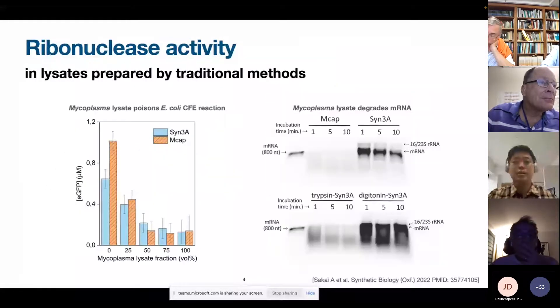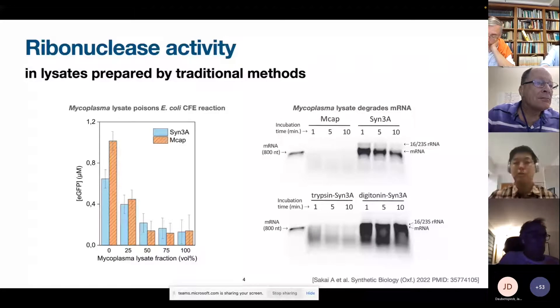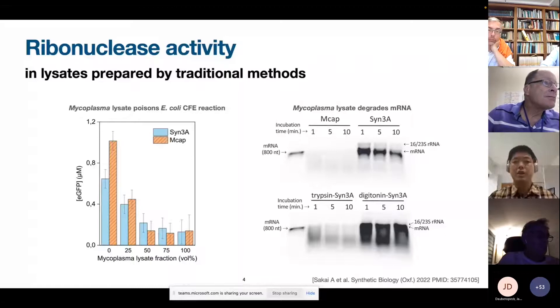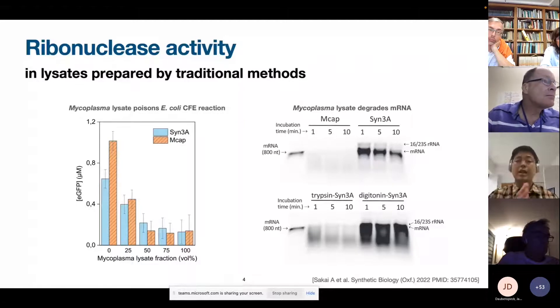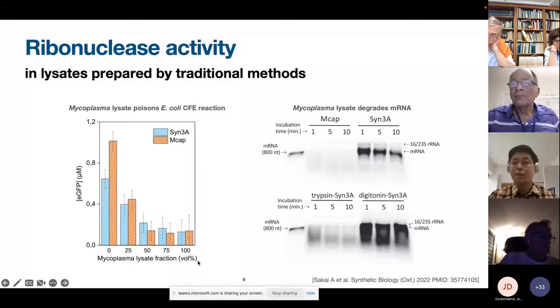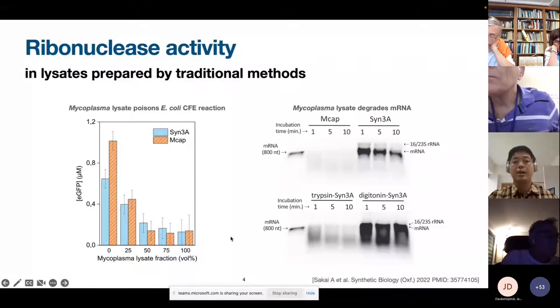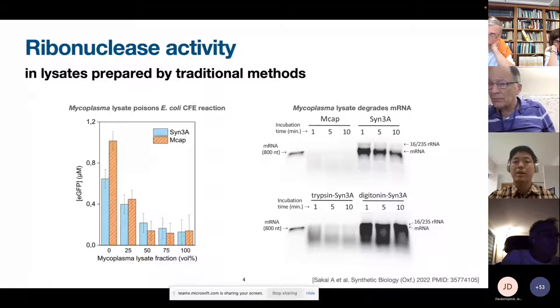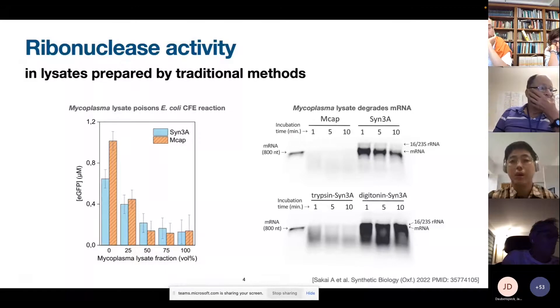And here I show some of our characterizations. So we found a high ribonuclease activity in mycoplasma lysates. So in the left hand side, you can see an experiment in which we added mycoplasma lysate into an E. coli CFE reaction. So you can see that this is a GFP expression. And as we increase the fraction of mycoplasma lysate into the system, GFP expression is just depleted. So it means that there's something in mycoplasma lysate that was just poisoning the E. coli expression of GFP.